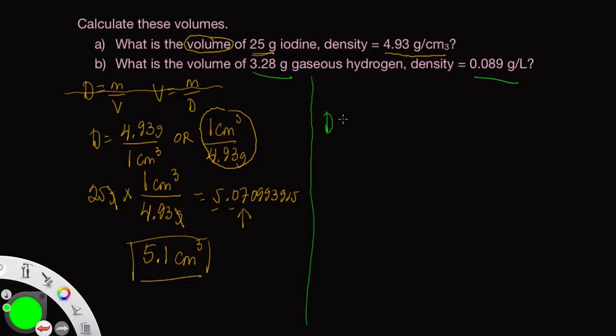So the density, once again, is 0.089 grams per 1 liter. That's the same thing as saying 1 liter is equivalent to 0.089 grams. So we can write these two fractions, which are used as conversion factors.